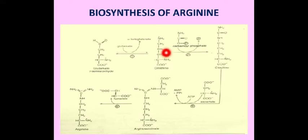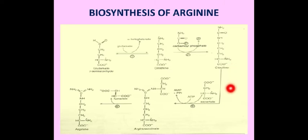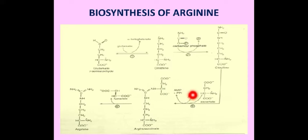The ornithine synthesized in this reaction enters the mitochondrial matrix from the cytosol and combines with carbamoyl phosphate to form citrulline. Citrulline is then transported back to the cytosol, where it combines with aspartate to produce argininosuccinate. This reaction is catalyzed by the enzyme argininosuccinate synthetase, and one ATP is utilized.